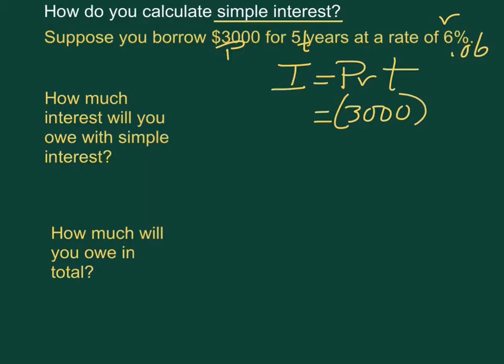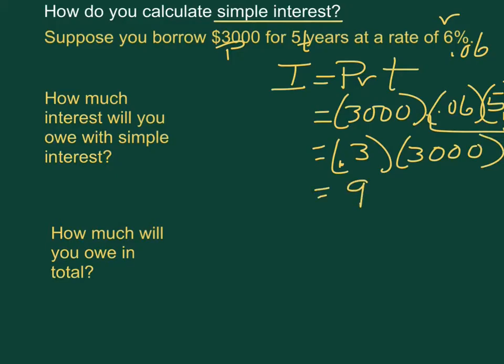$3,000 times .06 times 5. You can multiply these in any order because it's all multiplication. I might do the .06 times 5. 6 times 5 is 30. You have two decimal places. So that's .3 or .30 times 3,000. Now 3 times 3,000 gives you 9,000 but you have one decimal place so it's 900. So we know that interest is 900. You could also do that on a calculator.